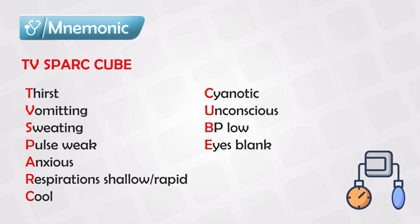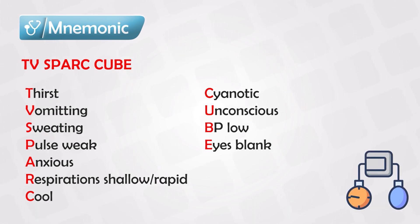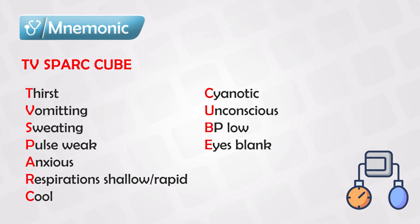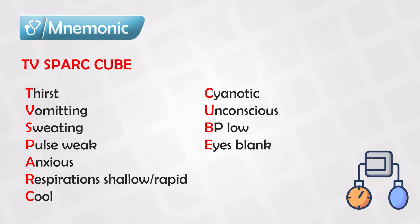The patient will often be cool to the touch. They might have cyanosis around their lips and fingers, which is a bad sign indicating no oxygen is reaching those areas. They can eventually become unconscious with low blood pressure and blank eyes — basically a stupor state where they don't recognize what you're saying.